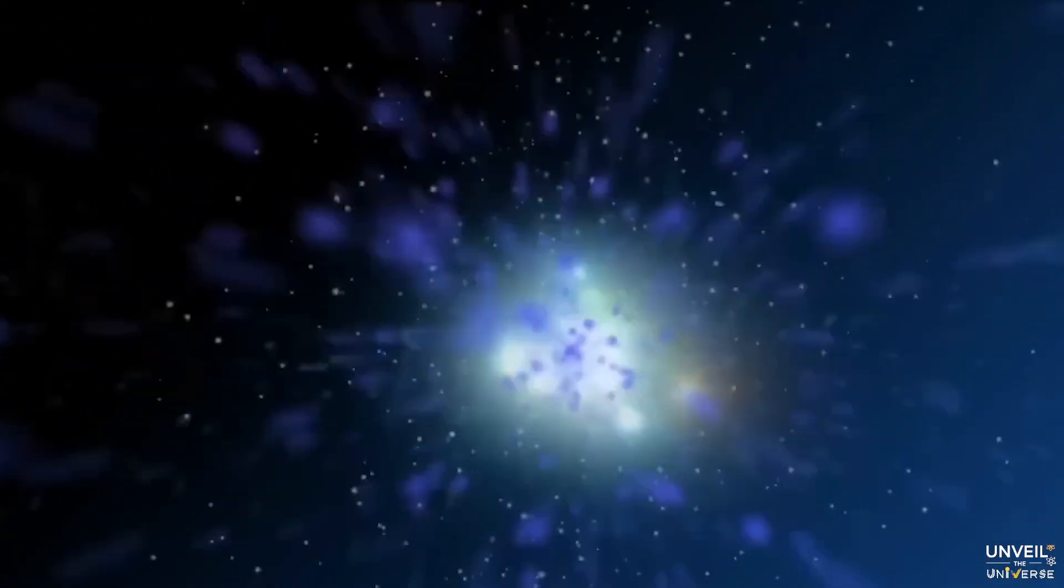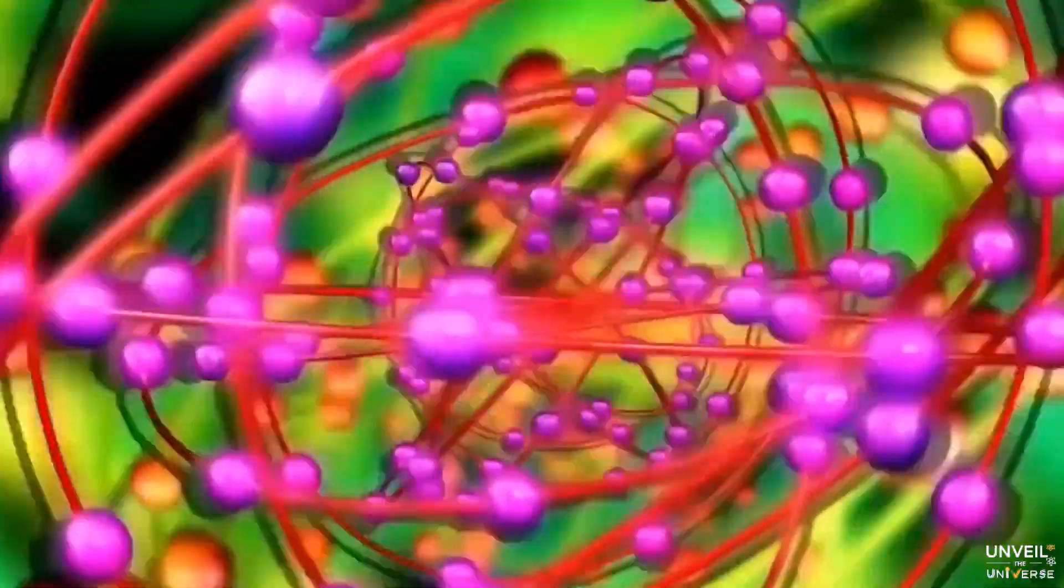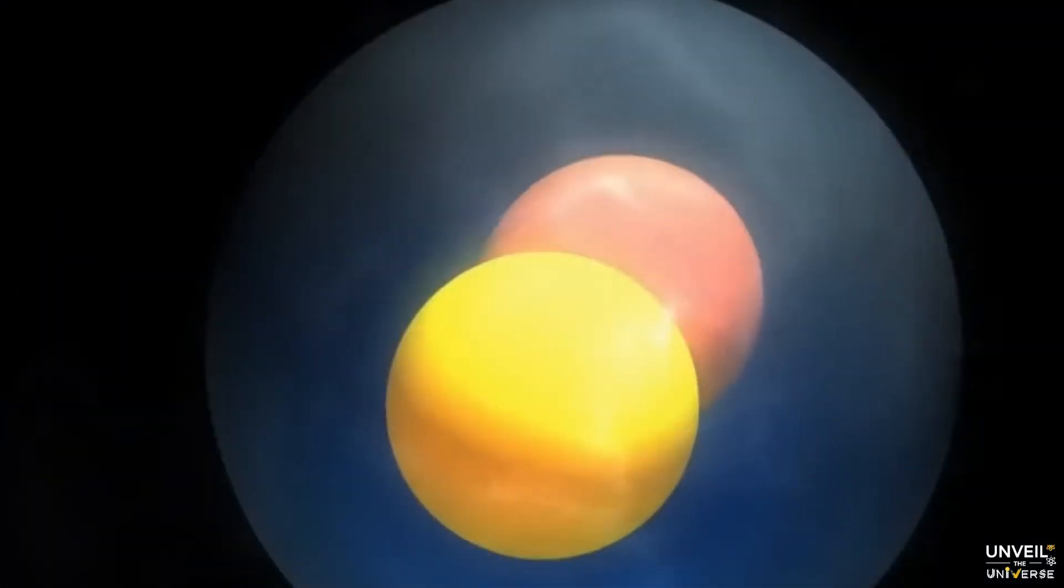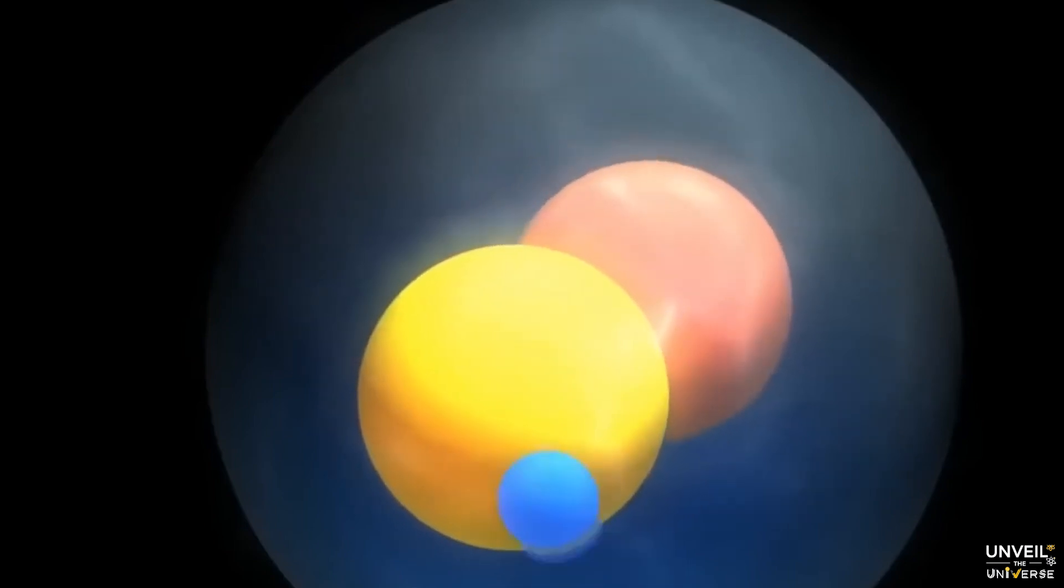This interaction only happens when subatomic particles, like protons, neutrons and electrons, are extremely close to each other, at a distance roughly one hundredth the diameter of a proton.